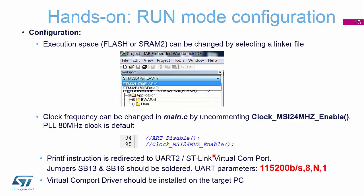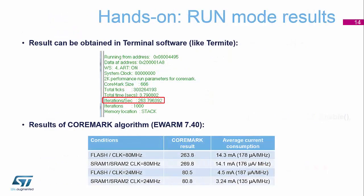Through the terminal program — Termite — we can display the results. Make sure the two solder bridges on the underside of the board are present, and run the terminal at 115,200 bits per second, 8 data bits, no parity, one stop bit. On the terminal you'll see results including total iterations per second. You should be getting around 14.3 milliamps when running the device at full speed from flash.